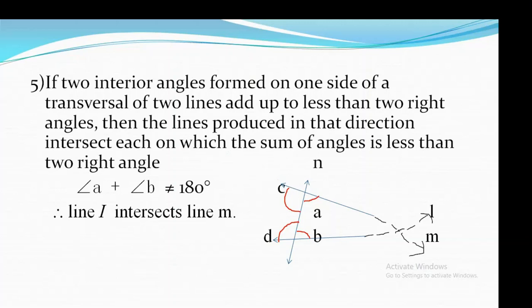In the figure, we have line L, line M, and line N. Line N is the transversal which intersects line L and line M. The interior angles so formed are angle A and angle B.